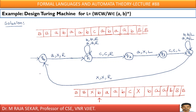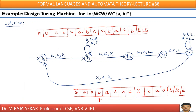Welcome to Rajashekar classes on formal languages and automata theory. This is lecture number 88. In this lecture, we will try to understand designing Turing Machines. Before understanding this lecture, I request you to go through lecture number 87, in which we discussed Turing Machine for Palindrome — both even palindrome as well as odd palindrome.